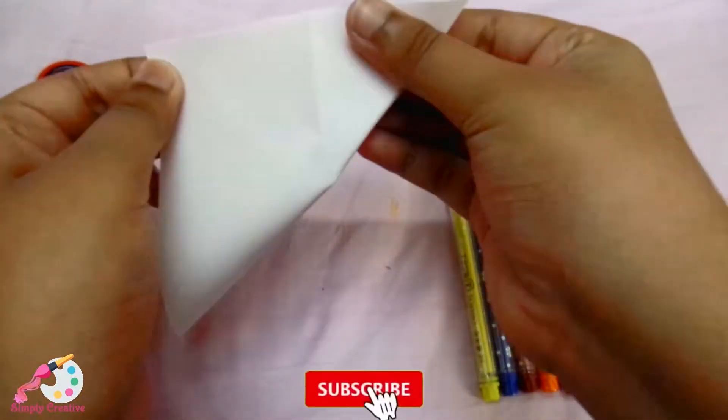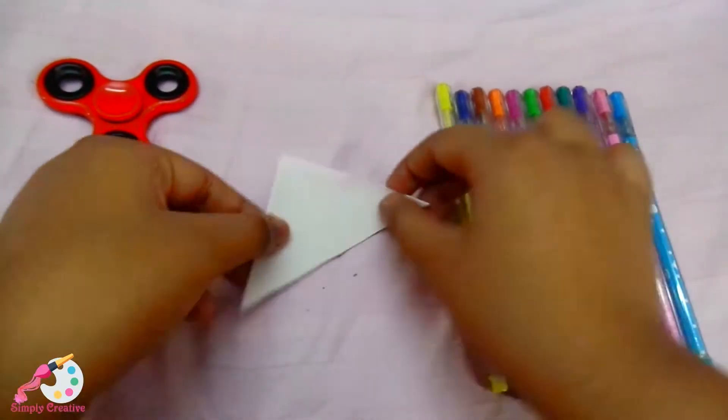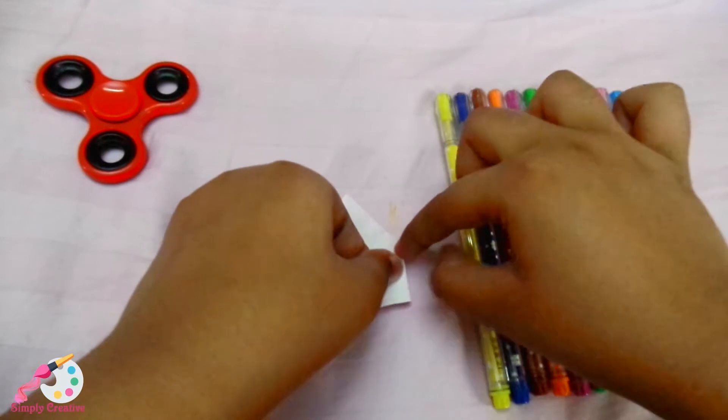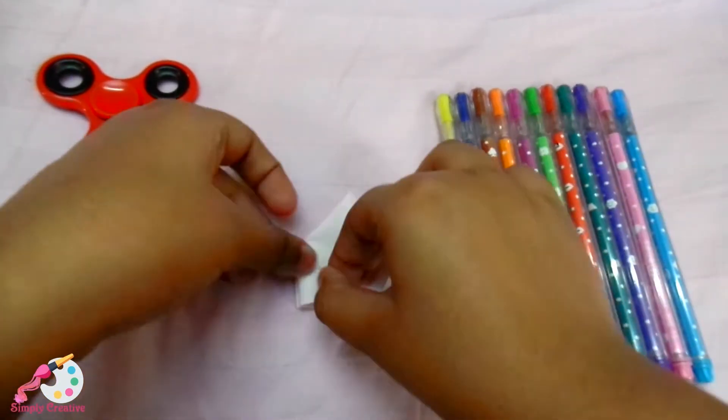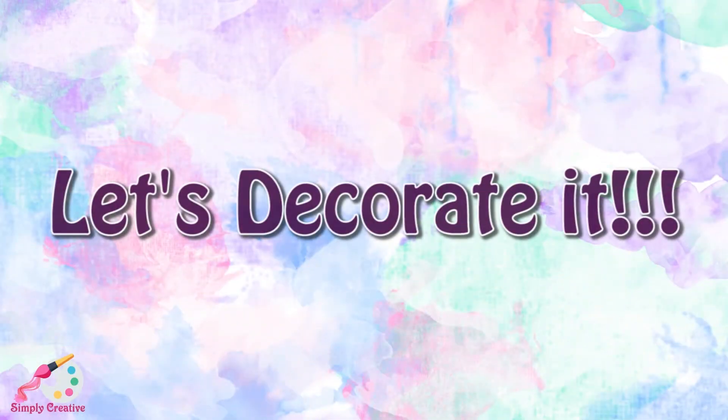I will fold it like this and make it a triangle, and then I will fold the corners and make it in. Done! It's so easy. Now let's decorate it.